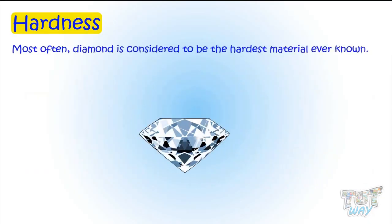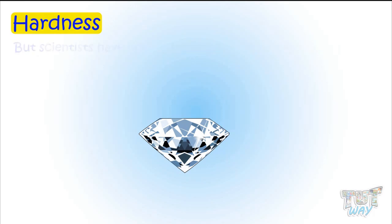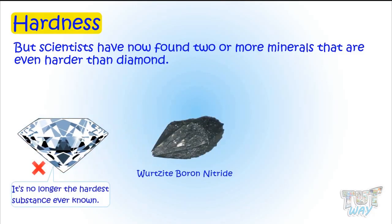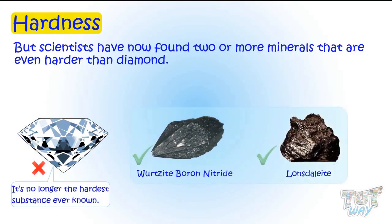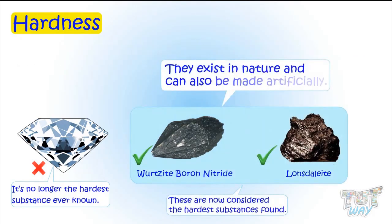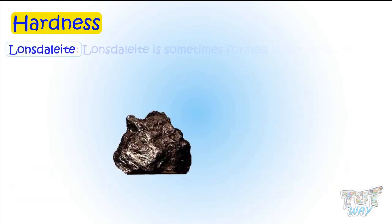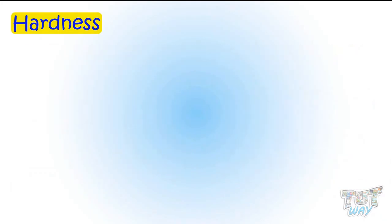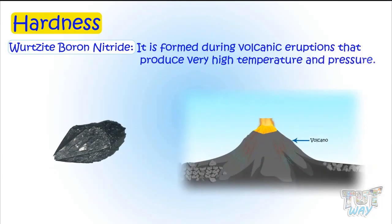Most often, diamond is considered to be the hardest material ever known. But scientists have found two more minerals that are even harder than diamond: Wurtzite boron nitride and Lonsdaleite. They exist in nature, but can also be made artificially. Lonsdaleite is sometimes formed when meteorites containing graphite hit the earth, while Wurtzite boron nitride is formed during volcanic eruptions that produce very high temperatures and pressures.